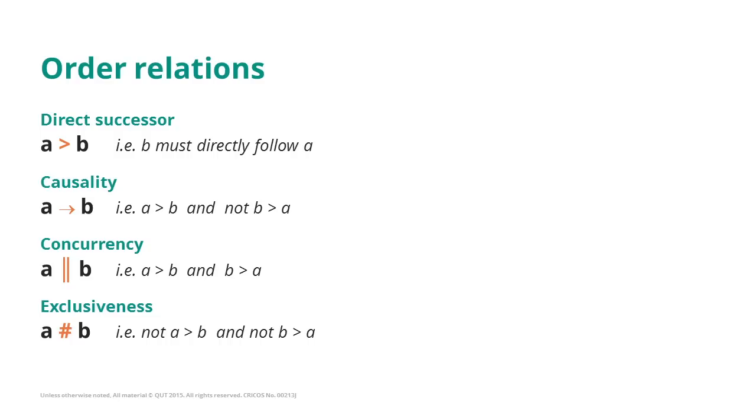Concurrency though is defined as a relationship between A and B where we have instances in the traces that show A being followed by B, and also B being followed by A.